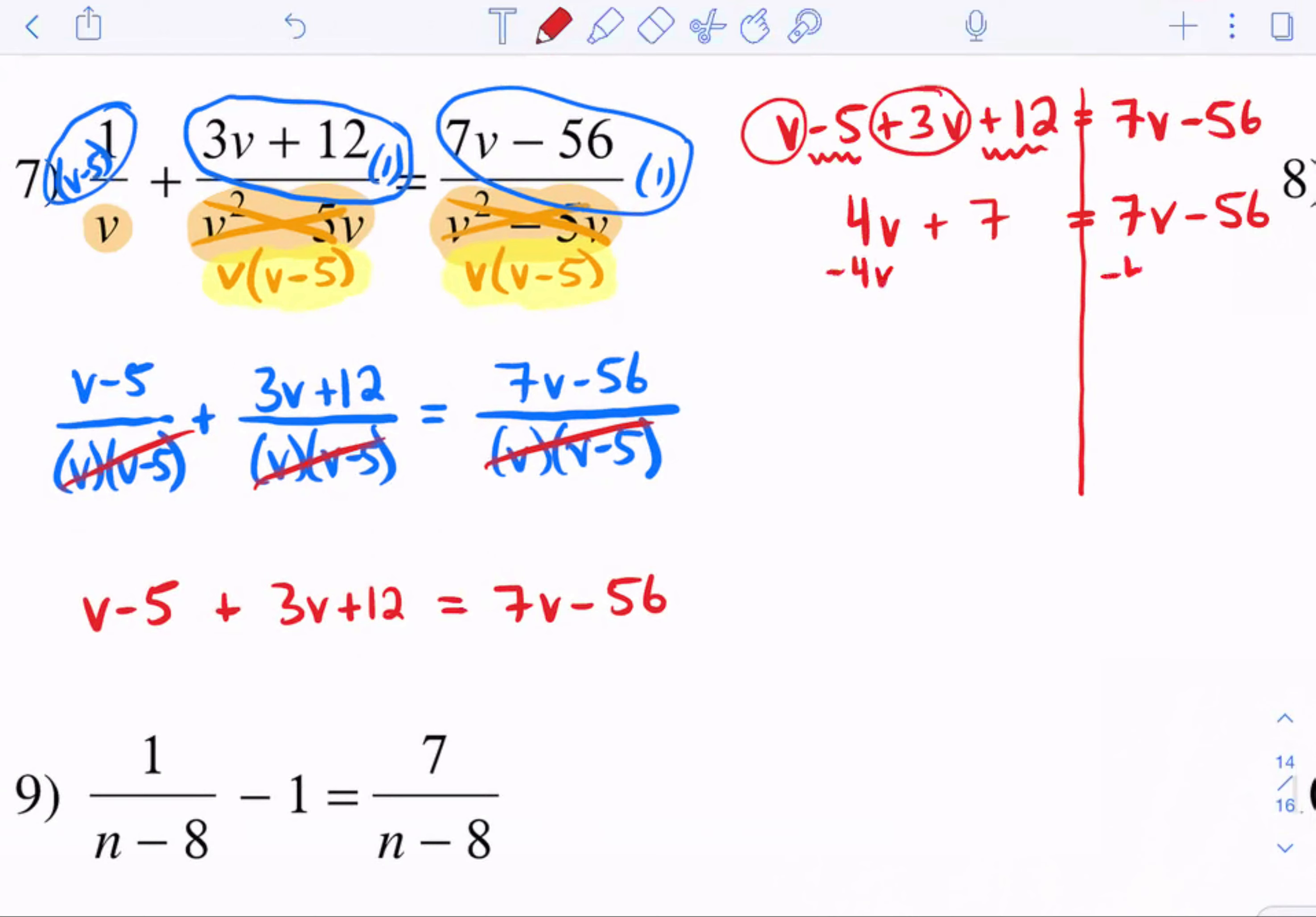And now I can move over the 4v. I always like to move the smaller variable, but you can move the bigger variable as long as you remember that it would be a negative instead. So then you add the 56. 56 plus 7 is 63. And then when you divide it by 3, you get that v equals 21.